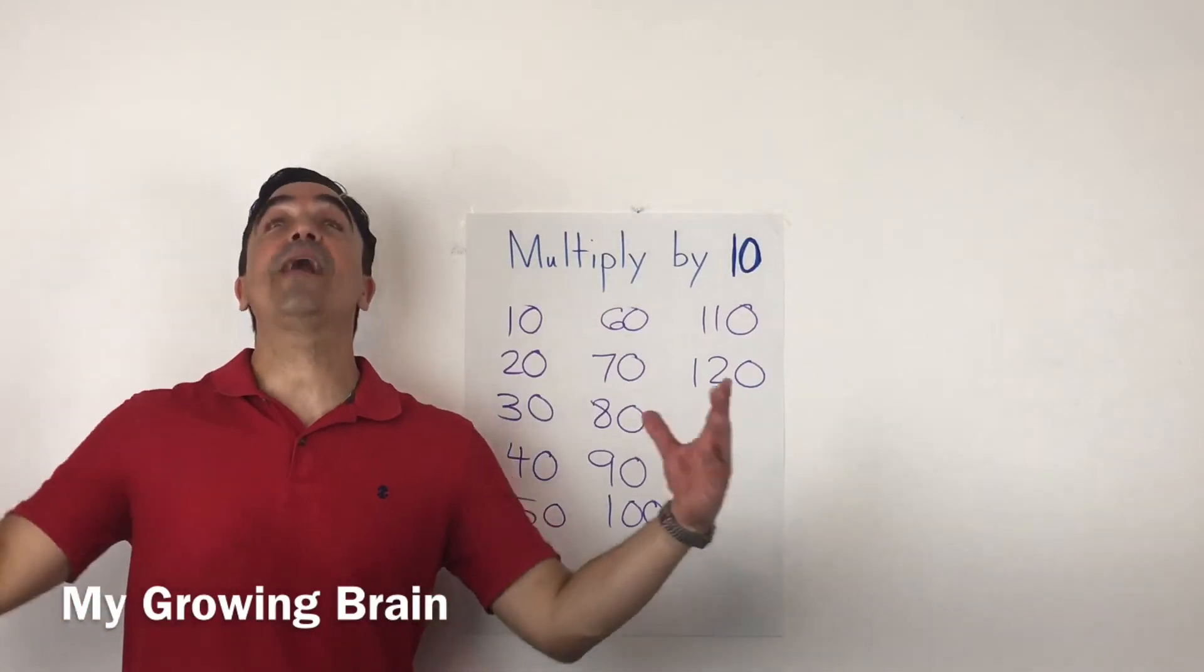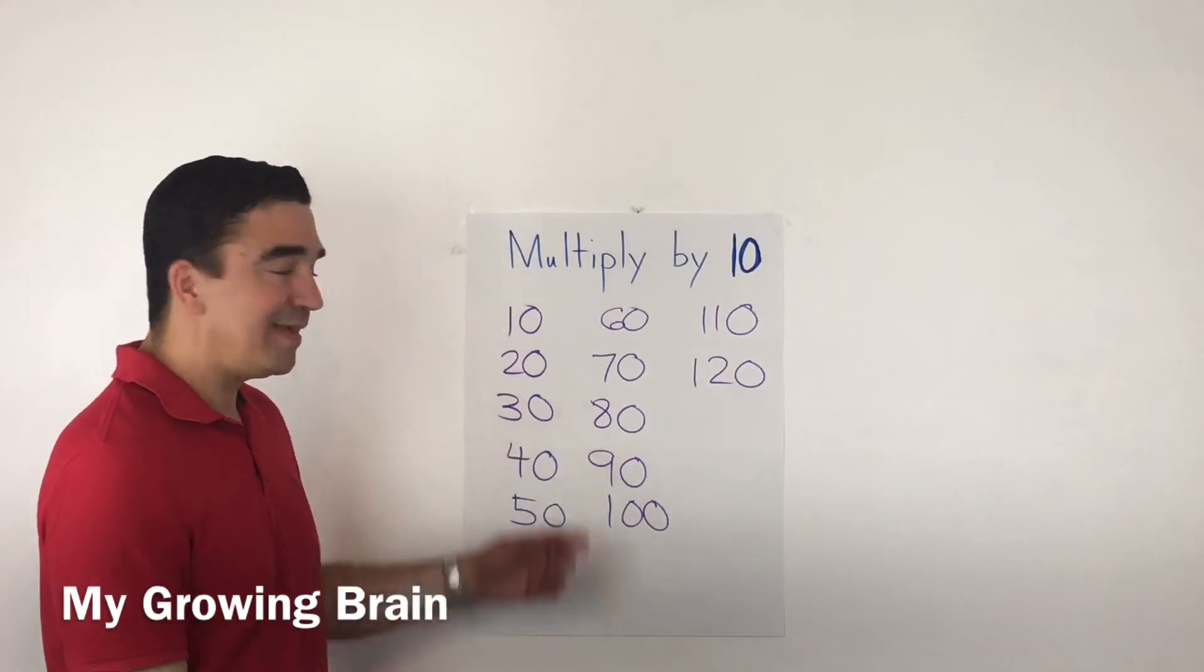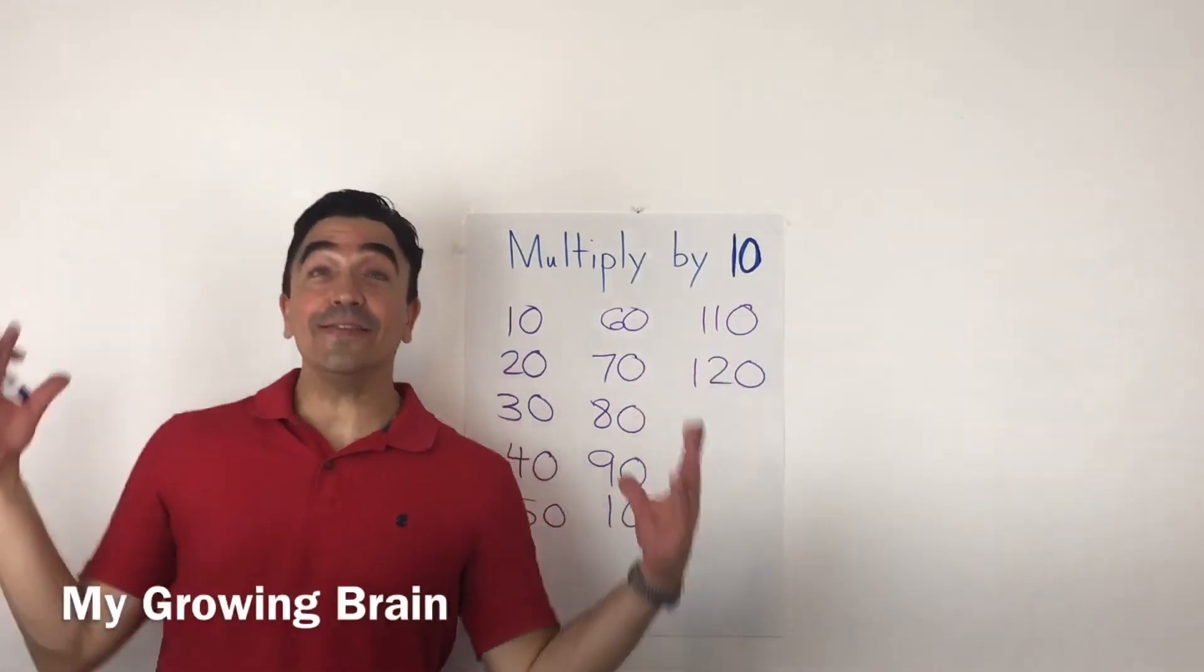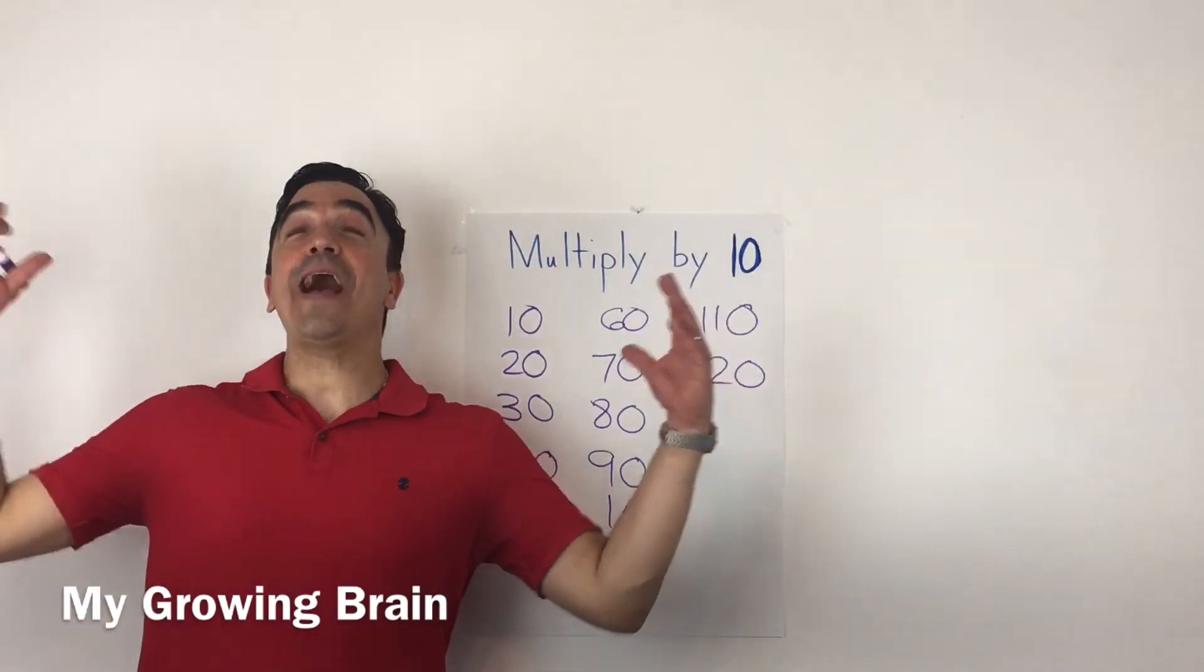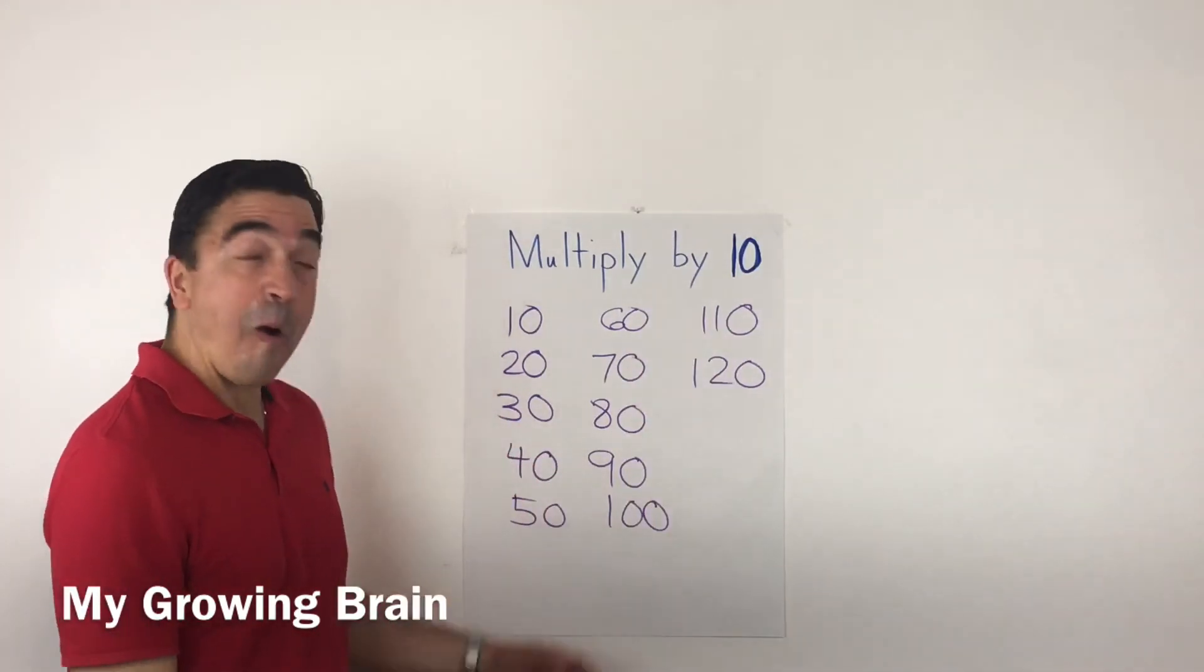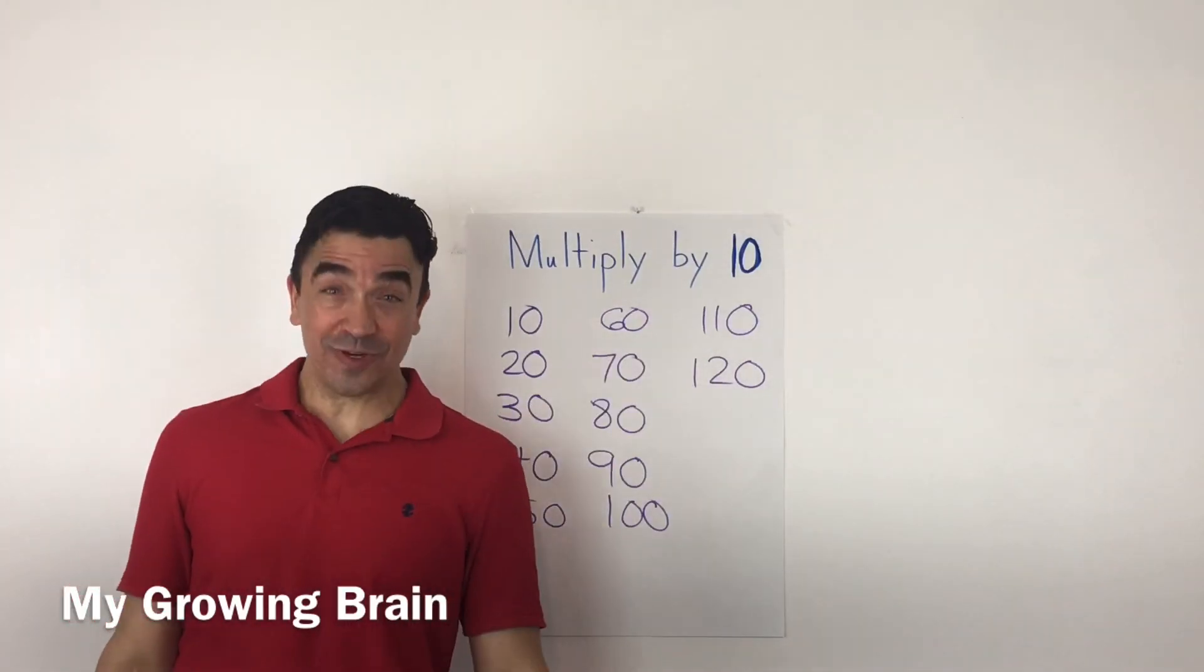10 times 5 is 50, 10 times 6 is 60, 10 times 7 is 70, 10 times 8 is 80, 10 times 9 is 90, 10 times 10 is 100, 10 times 11 is 110.